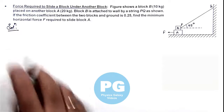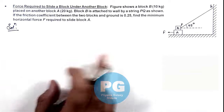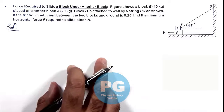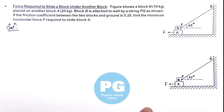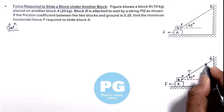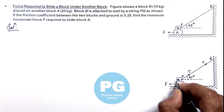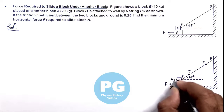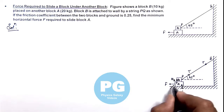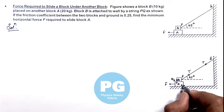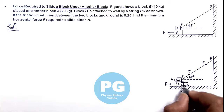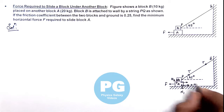To understand the situation better, we need to analyze all forces acting in this system. Due to the applied force, a tension T is developed in the string. A normal reaction N1 acts between block A and the ground, and another normal reaction N2 acts between block A and block B. When force is applied on A and it is pulled, friction will oppose the motion of block A, so on both surfaces friction acts in the opposite direction: mu*N1 and mu*N2.